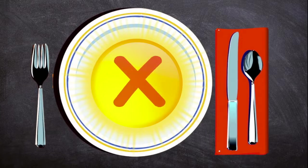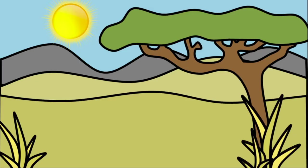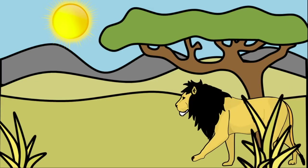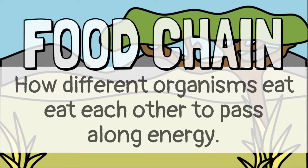But we can't eat sunlight. In order for animals to get the energy they need from the sun, it must make its way up the food chain. A food chain describes how different organisms eat each other to pass along energy.